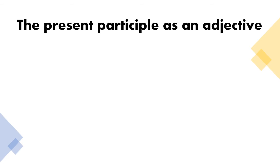Now, let us look through present participle as an adjective. Here are some examples. It was an amazing film. The word amazing is an adjective.